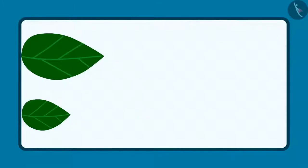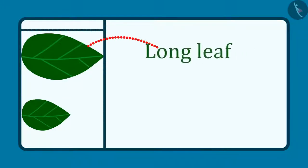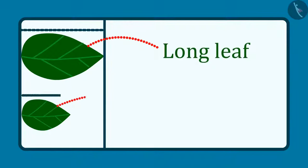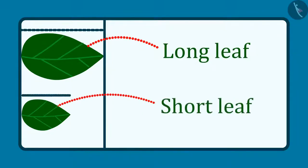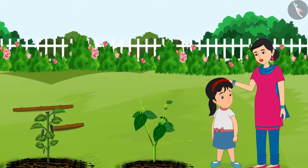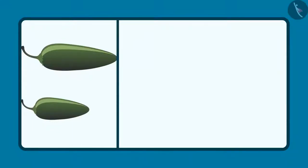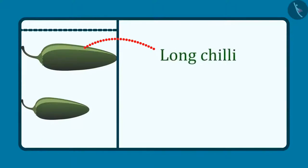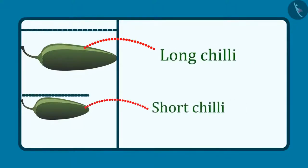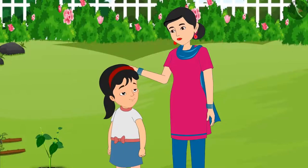Pinky confirms: Yes, Mummy. This means that out of these two, this is the long leaf and this is the short leaf. Yes, Pinky, you are absolutely right. Mummy, look at that chilli plant. And even in this, the length of both the chillies is different. Out of these two chillies, this chilli is long and this chilli is short. Right? Yes, Pinky, you understood correctly.